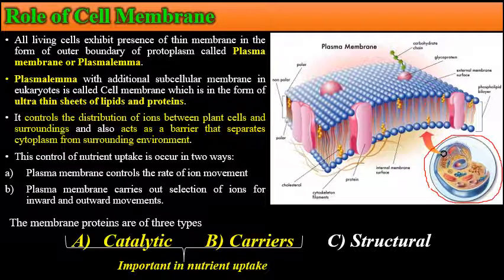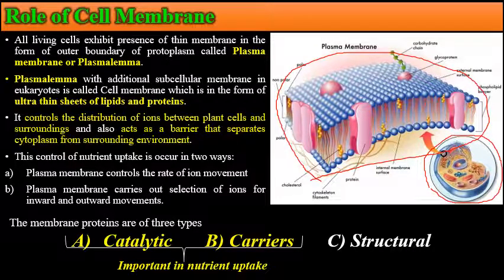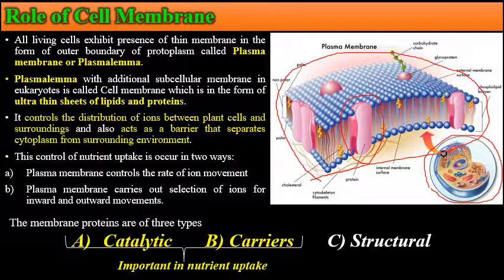The plasmalemma, along with additional subcellular membranes in eukaryotes, is called the cell membrane, which exists as an ultra-thin sheet of lipids and proteins. In this particular image of the cell membrane, the pinkish-colored part represents protein while the blue-colored part represents the double layer of lipids. This plasmalemma controls the distribution of ions between plant cells and their surroundings, and also acts as a barrier separating the cytoplasm from the surrounding environment.